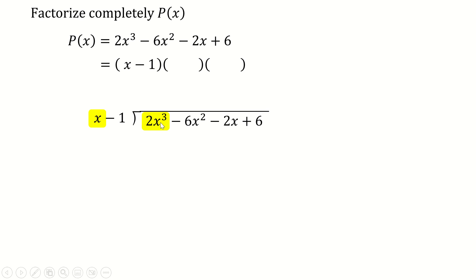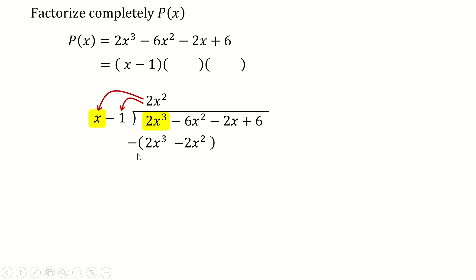In the first step of long division: 2x² times x gives 2x³, and 2x² times -1 gives -2x². Subtracting: 2x³ - 2x³ = 0, and -6x² minus (-2x²) = -4x². We bring down -2x + 6, leaving -4x² - 2x + 6.